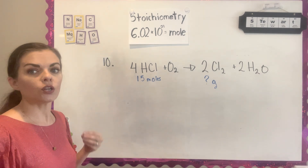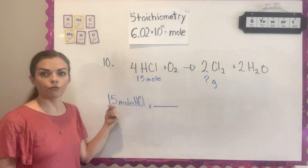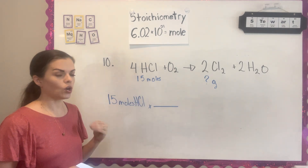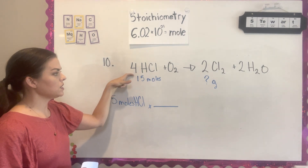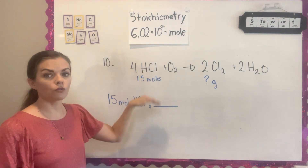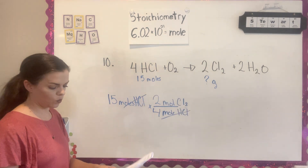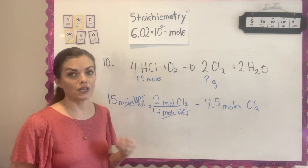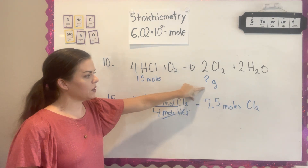We cannot go directly from moles of HCl to grams of Cl2 in one step. Starting with 15 moles of HCl, we first go from moles of HCl to moles of Cl2 using the coefficients as a mole-to-mole ratio. Calculating 15 × 2 ÷ 4, you end up producing 7.5 moles of Cl2. This is like a pit stop — you must do moles-to-moles first, but the question is asking for grams.